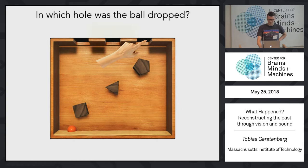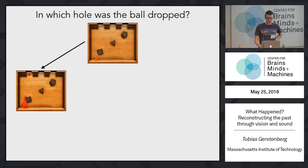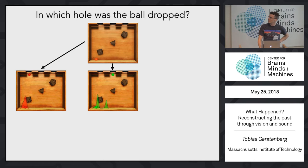Okay. So here's how we do inference, right? We just run a forward model for the different possible locations. So we imagine if the ball was dropped in there, on the left side, where would it end up?